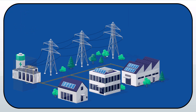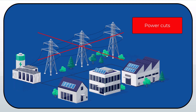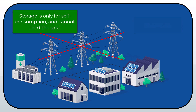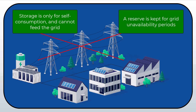However, in countries where the grid is weak or intermittent, ensuring electrical availability throughout the day can be a problem, especially during power cuts. Therefore, in the weak grid islanding strategy, the energy in the batteries is aimed solely at self-consumption and will not be fed back to the grid. Furthermore, a certain reserve is kept for the case of grid unavailability.